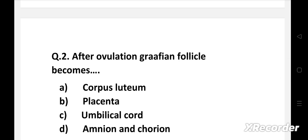Next question. After ovulation, graafian follicle becomes: A: corpus luteum, B: placenta, C: umbilical cord, D: amnion and chorion.